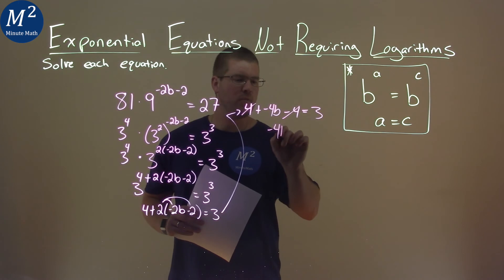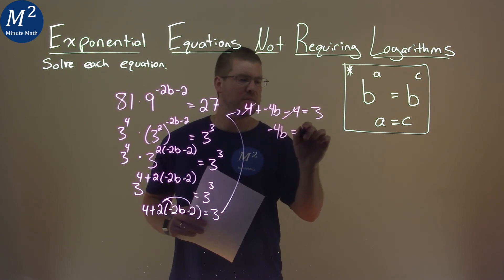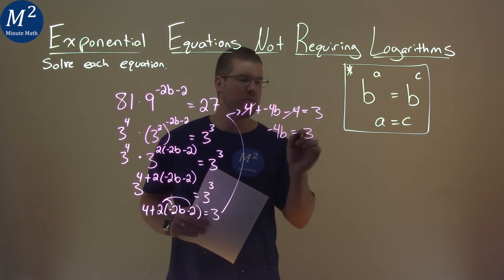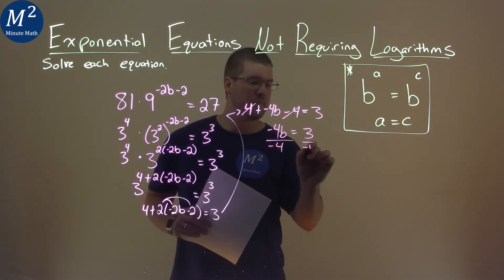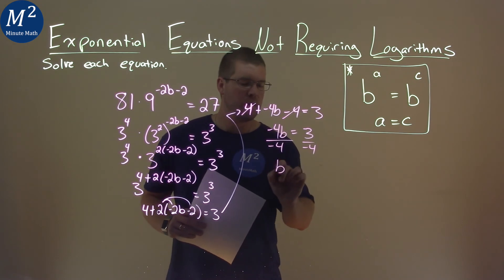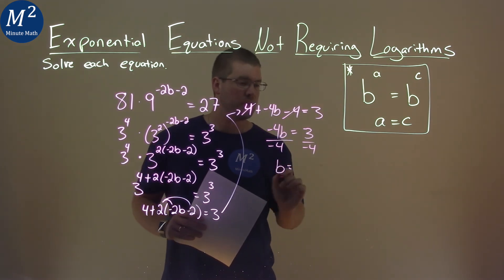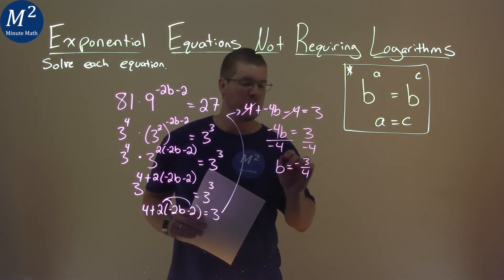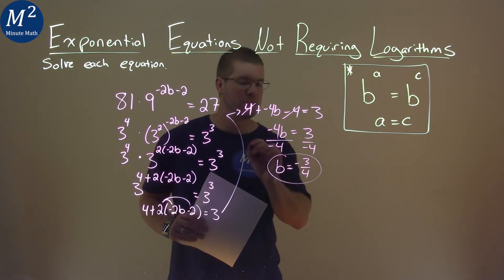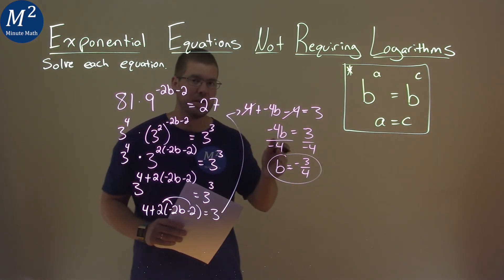We have negative 4b now equals just 3. Divide both sides by negative 4, and b is now by itself, and it's equal to negative 3 fourths, and that is our final answer.